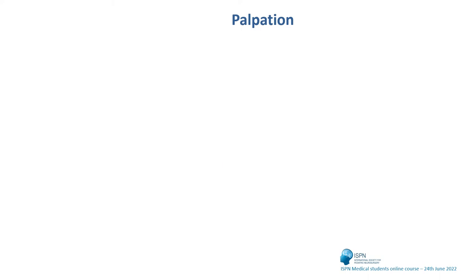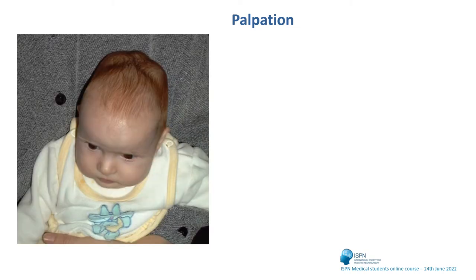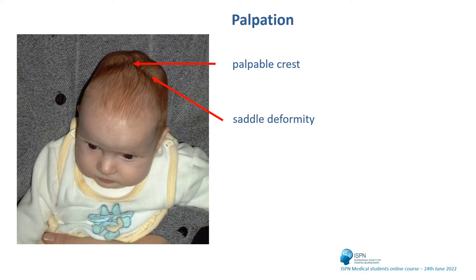Palpation is sometimes also a good investigation technique. In sagittal synostosis there is a palpable crest, and at the same time — also found quite often in patients with sagittal synostosis — you can see and palpate a saddle deformity.